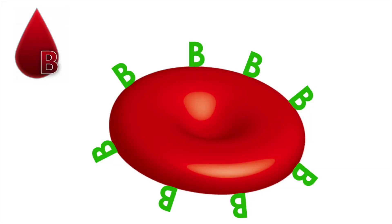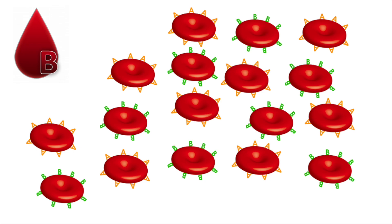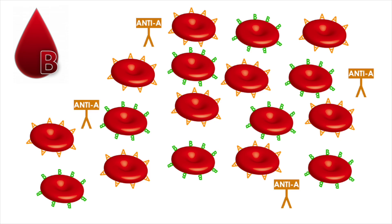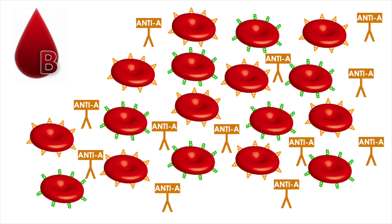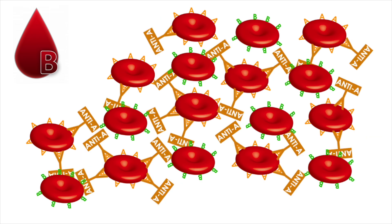Just like with the A blood example, if B blood is exposed to A blood, it will elicit an immune response producing anti-A antibodies, which will attack the A blood cells and cause agglutination or coagulation.